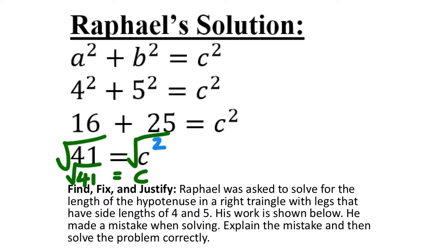Another common error is mixing up legs and hypotenuse. This problem specified the legs were 4 and 5, so we always take the squares of the legs and add them — that equals the hypotenuse squared. If a problem involves the hypotenuse value being known, it must tell us. And with pictures, we need to identify which parts are legs and which is the hypotenuse. It has to be one or the other. If you have trouble remembering the hypotenuse, there's a skit by Key and Peele that might help.